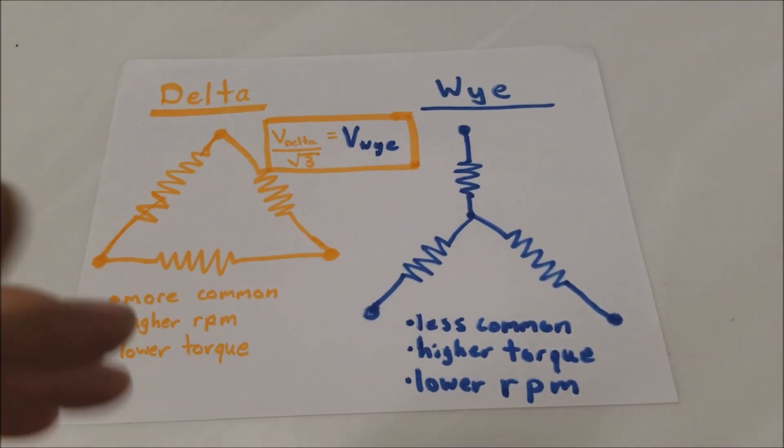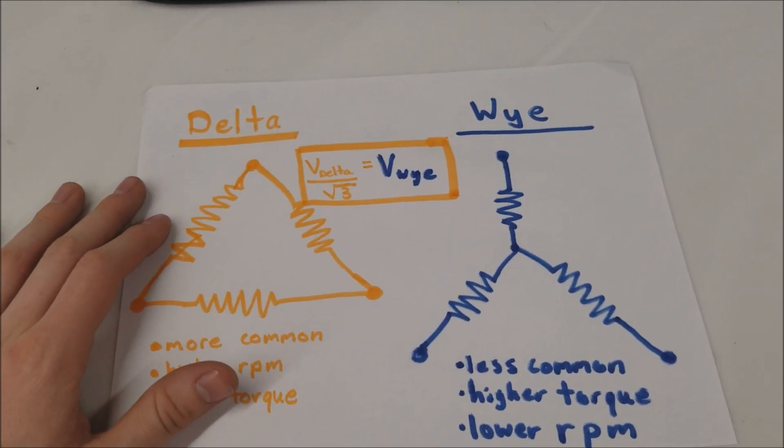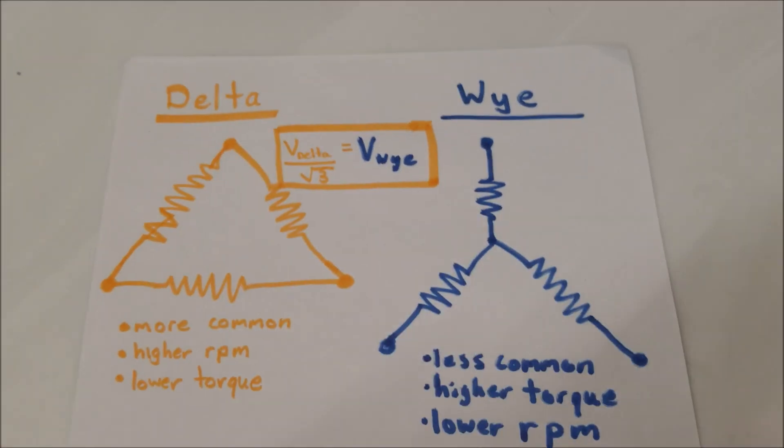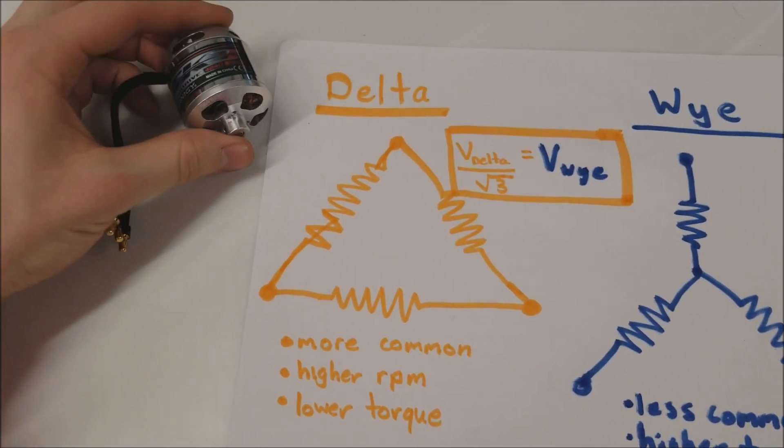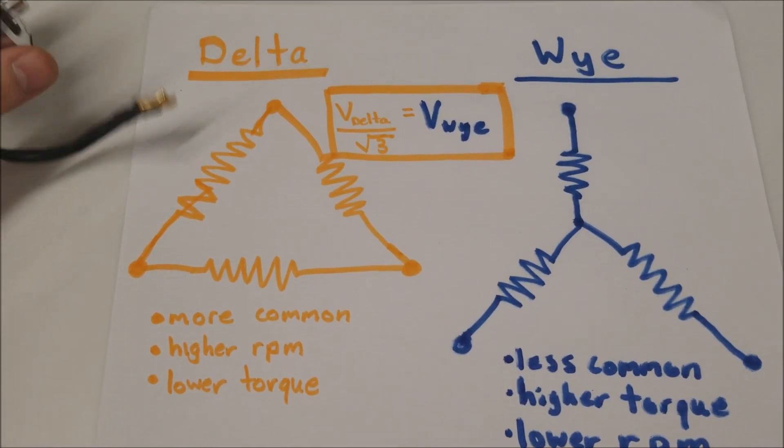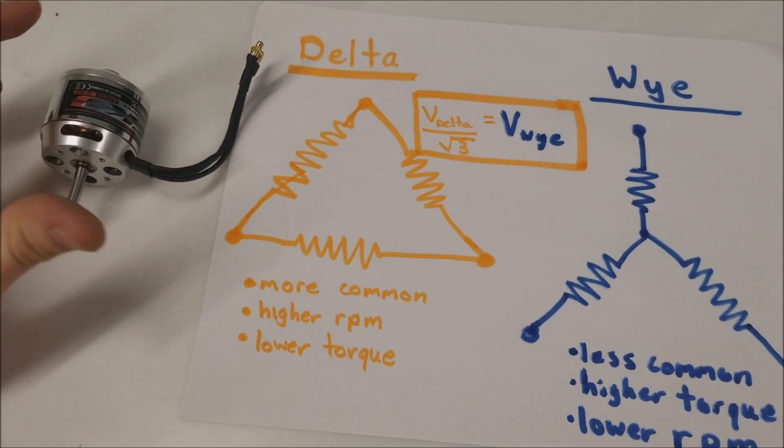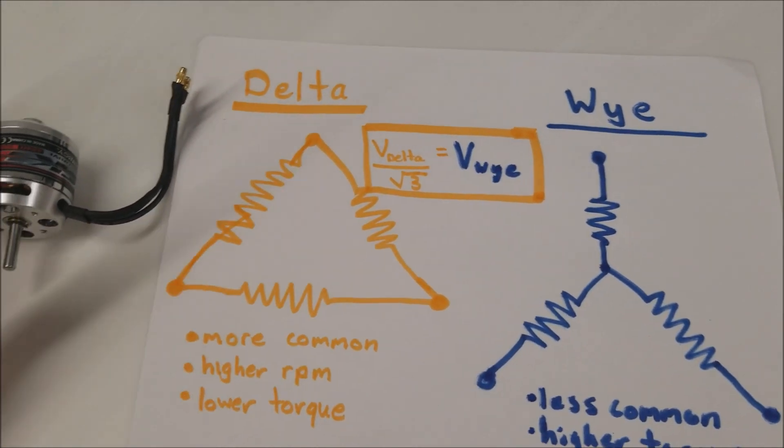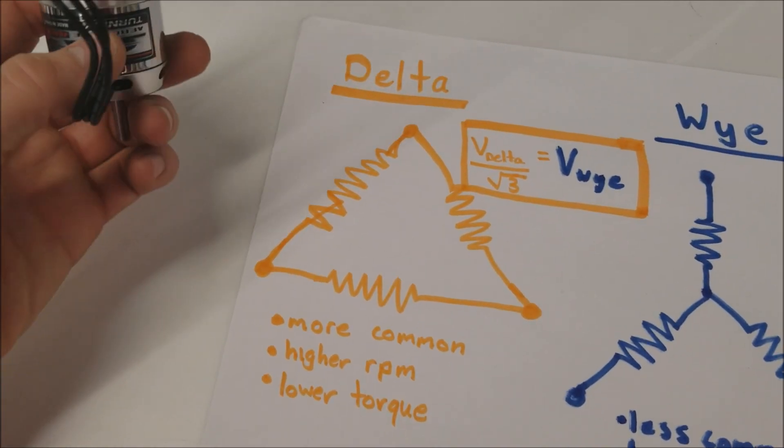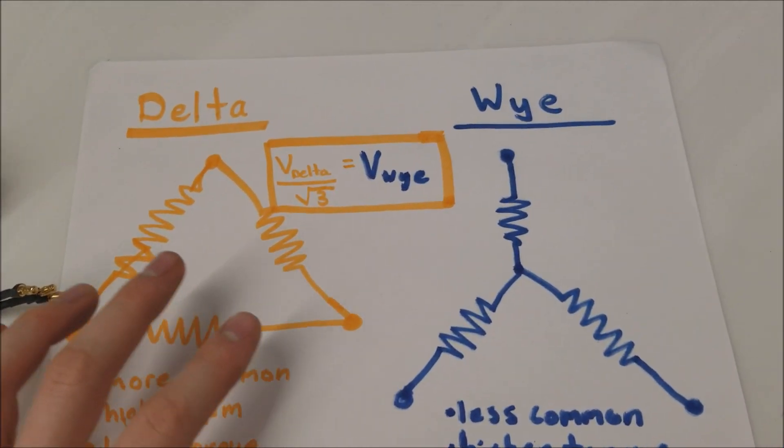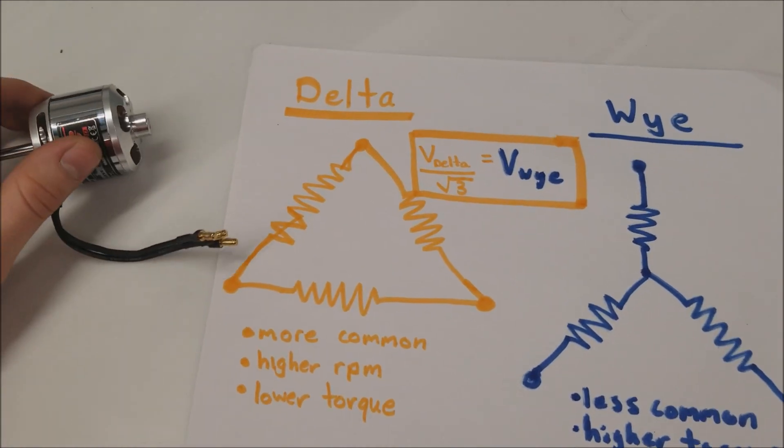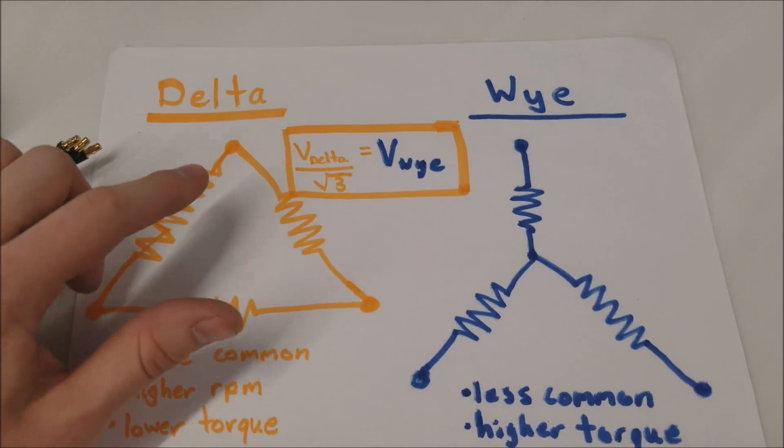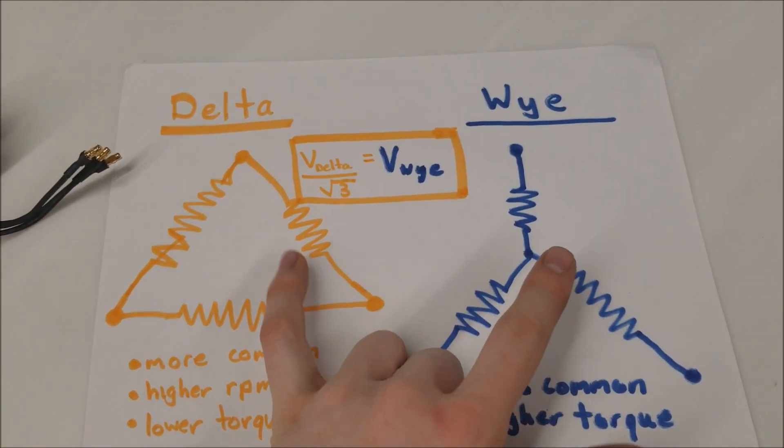Now I'm going to explain pretty briefly the difference between a Delta and Y termination. All these brushless OutRunners in the hobby market are normally three phase motors. Essentially there's three large resistors that have current running through them and they're the ones that are contributing to the rotation of the motor. But those three phases, essentially three really long wires, can be put together in different methods. The two main ones are Delta and Y.